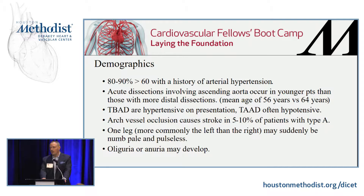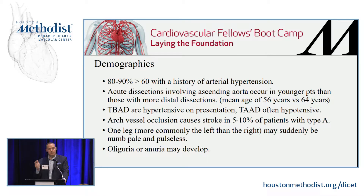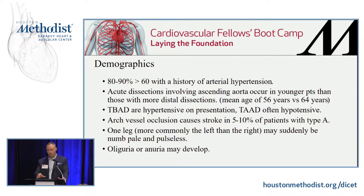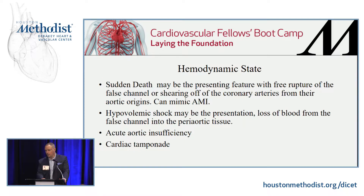The vast majority of these patients, especially older ones, are going to have poorly controlled arterial hypertension. If you have younger patients, start thinking about cocaine, meth, or other drug use, or connective tissue issues. Most type B patients are very hypertensive on presentation, whereas type A patients are frequently hypotensive — an easy way to differentiate them in the ED. Type A patients can have strokes in 5 to 10 percent of cases, present with leg ischemia, or with oliguria or anuria if the renals are involved.